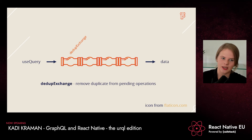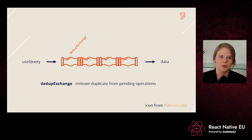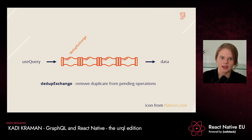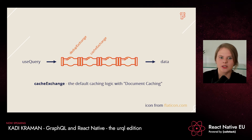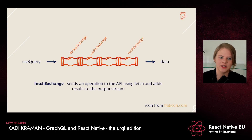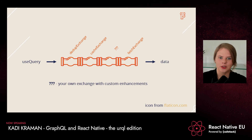Let's look more deeply into the default exchanges that come prepackaged with Urql. The first is the dedupe exchange, which removes duplicates from pending operations. This is handy if you render a React tree where two components have a useQuery with exactly the same query — the dedupe exchange spots that and removes the duplicate, so both components can consume the same instance of the data. We also have the cache exchange, which is the default caching logic using document caching. And finally, we have the fetch exchange, which takes the operation, sends it to the API using fetch, and adds the results to the output stream.